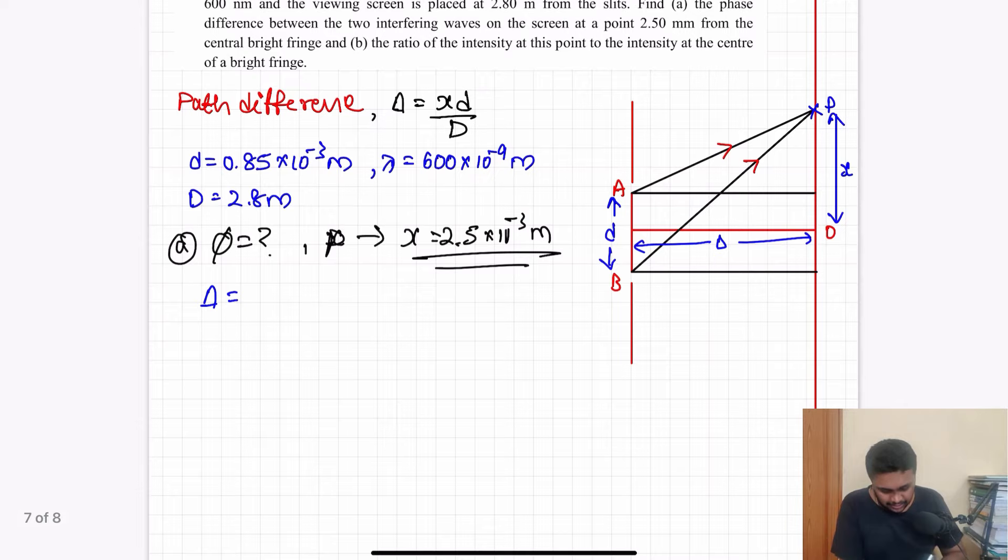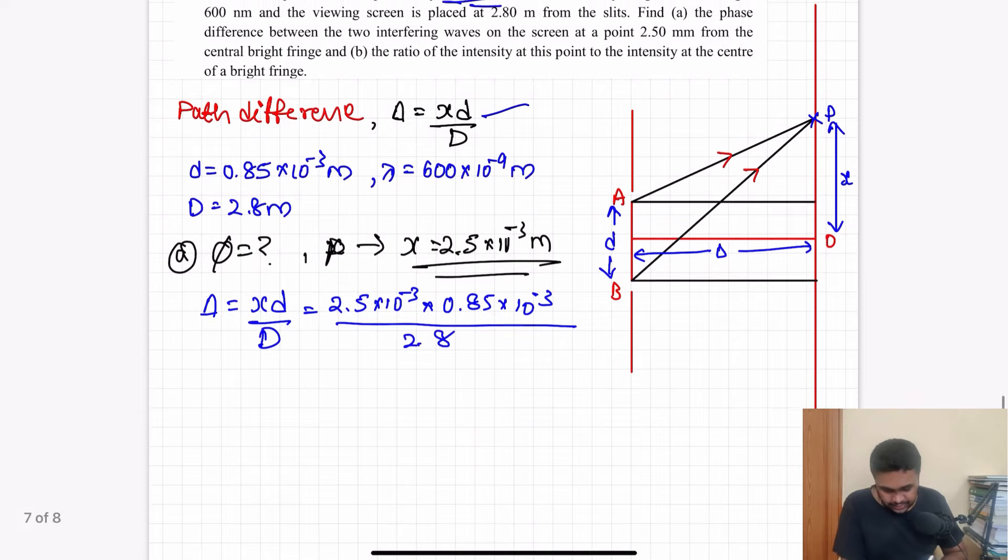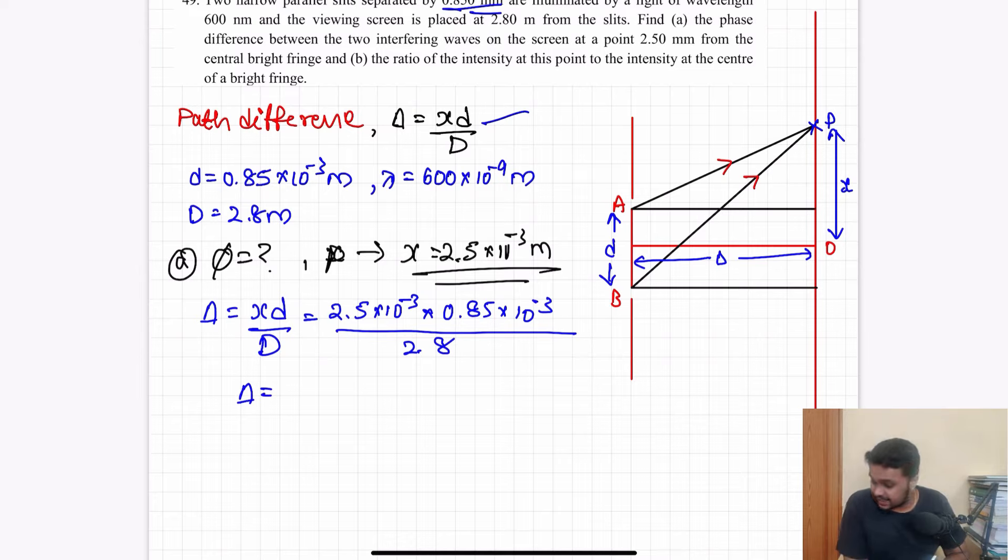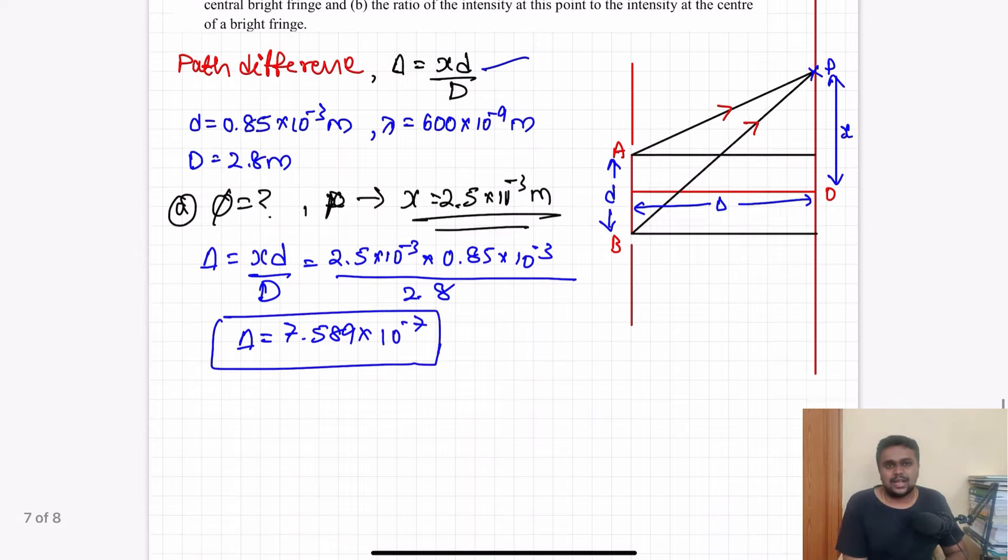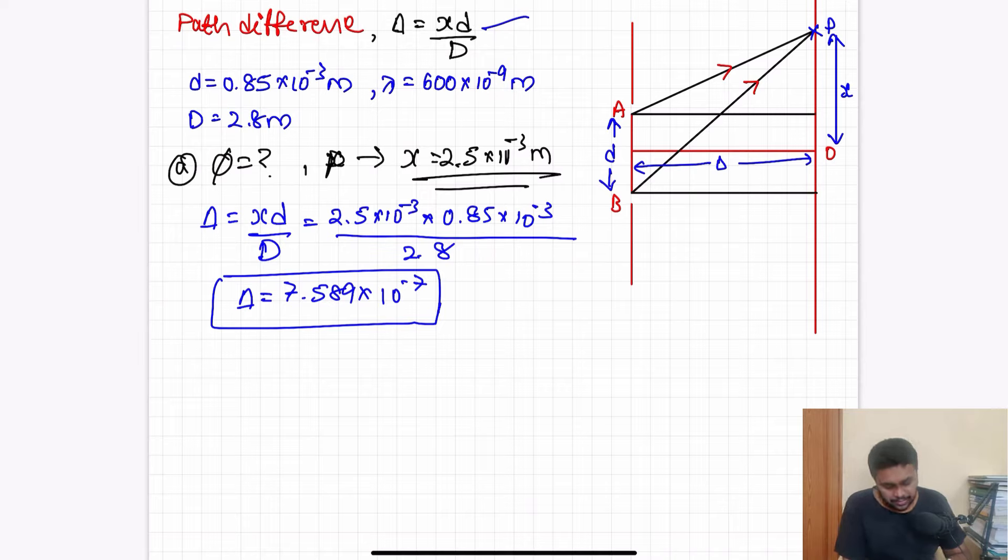So delta will be equal to the formula xd by D. So x value is 2.5 into 10 power minus 3, small d value is 0.85 into 10 power minus 3, whole divided by capital D is 2.8.